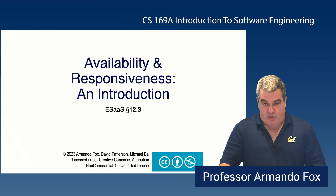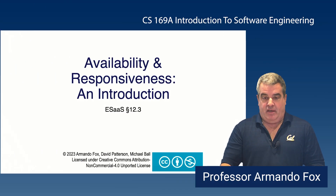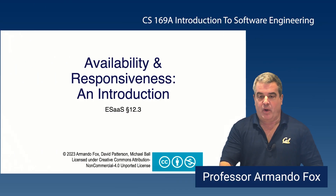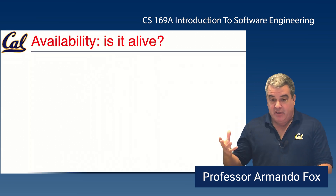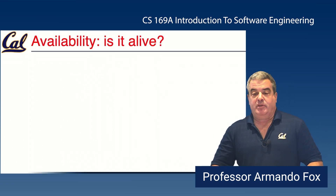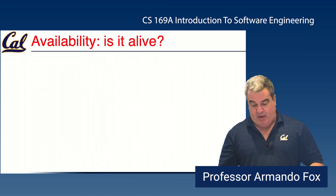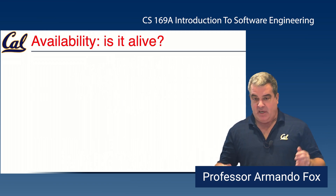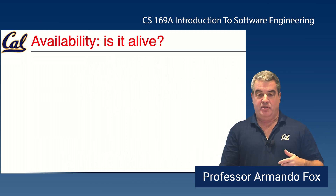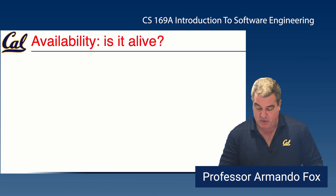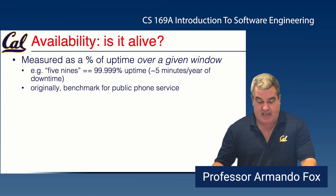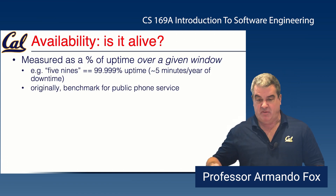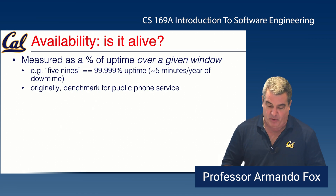Let's talk about availability and responsiveness — probably what most people think of when they think of web services being reliable. Availability seems like it should be pretty simple to characterize: is your app alive or is it not? If you try to make a request, do you get something, or do you get a timeout or some sort of error? Typically it's measured as a percent of uptime over some given window, and that last phrase is really important.